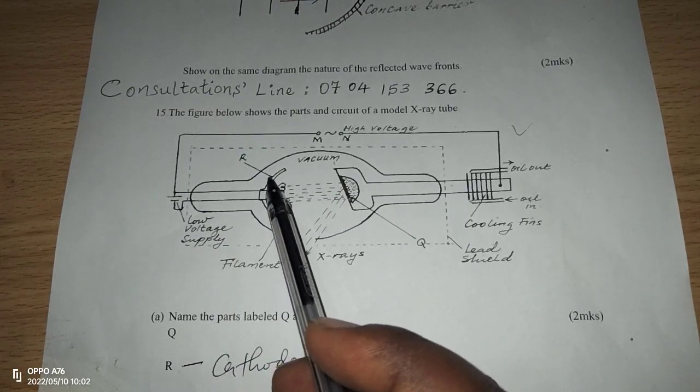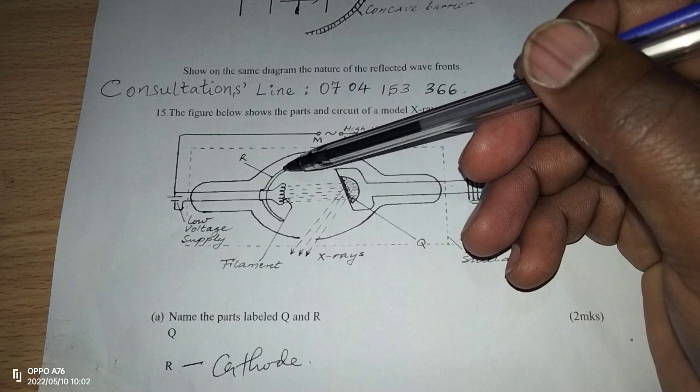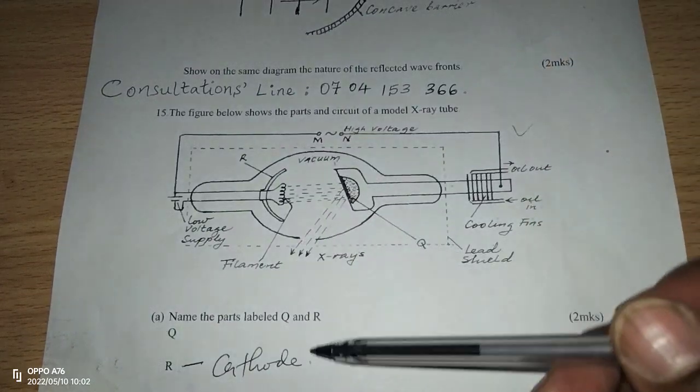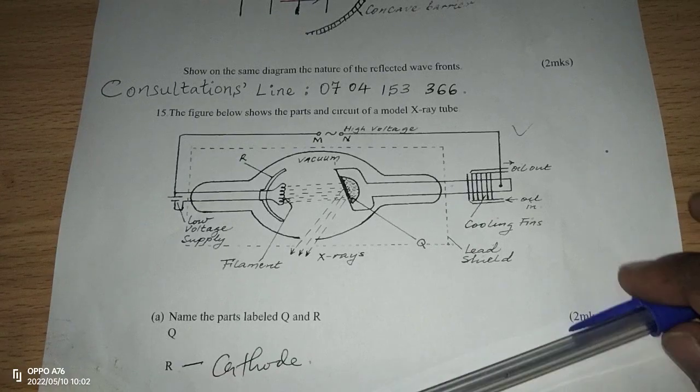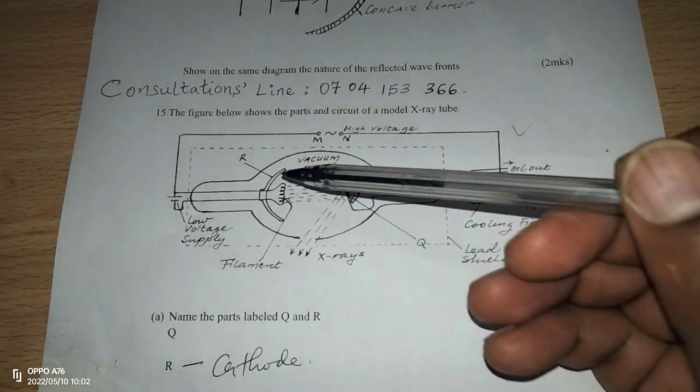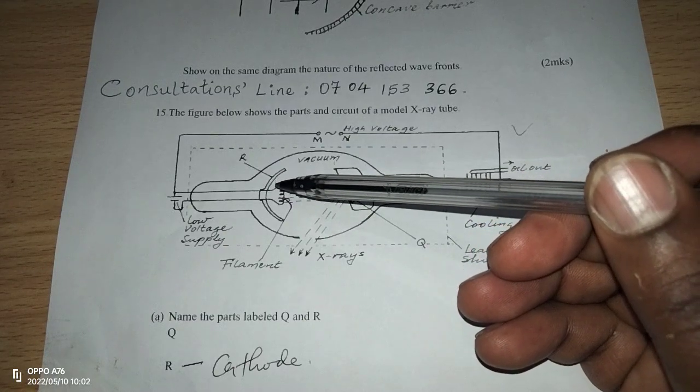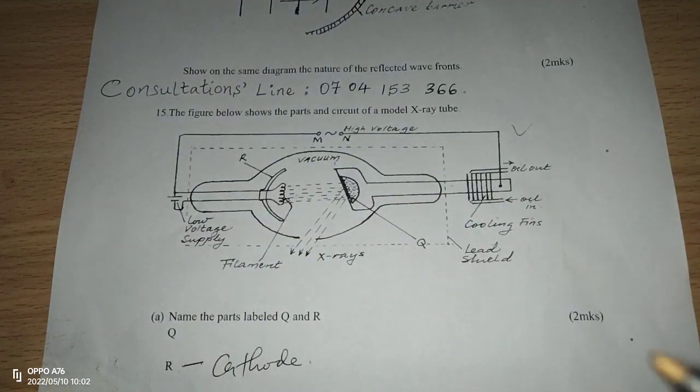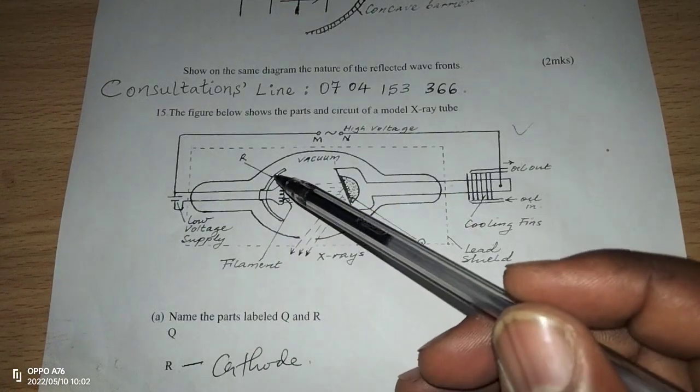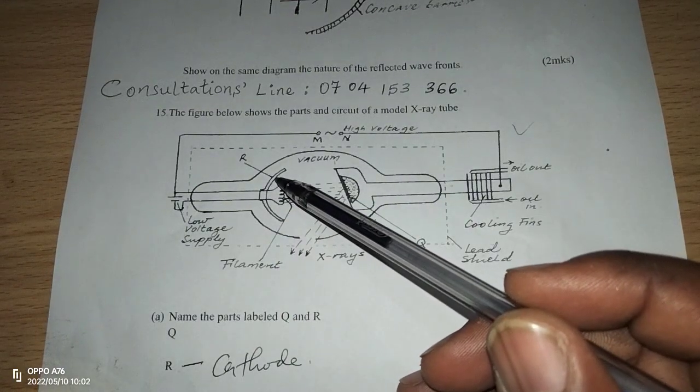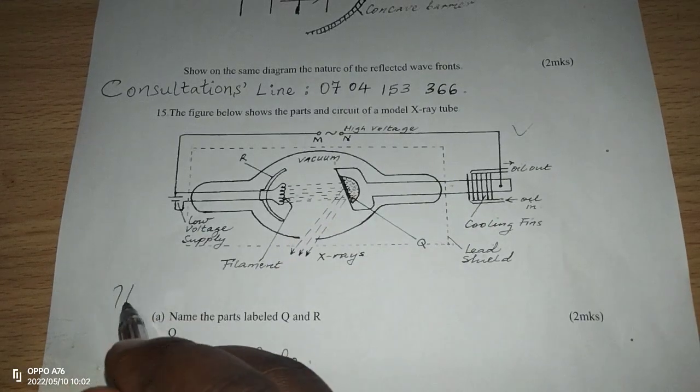When electrons in the metal surface of the cathode get heated up, they gain a lot of kinetic energy and become excited. At a given temperature, the electrons will break off from the metal surface of the cathode. We say thermionic emission has taken place. The process causing electrons to get dislodged from the metal surface of the cathode is called thermionic emission.